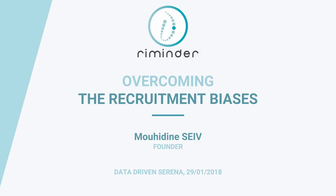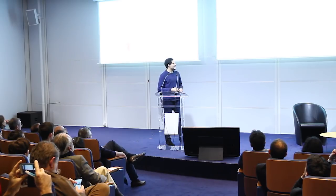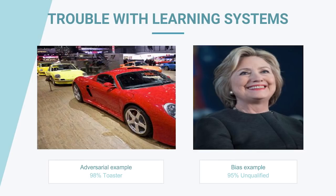When we talk about deep learning and machine learning, we know that it's an area that is right now completely exploding. And there are two big risks with this area. The first one is adversarial examples, and the second big risk is biases that the system can capture during training time.